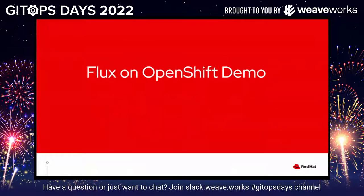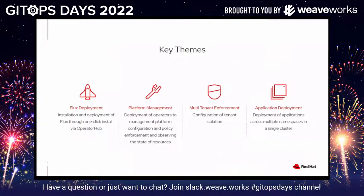Let's talk about how Flux and OpenShift can be realized with a great demo. Some of the key themes we're going to highlight: first, we'll deploy Flux on OpenShift by going into the OperatorHub. We'll talk about how platform teams can manage the deployment of namespaces on a Kubernetes environment. We'll focus on security aspects and isolate different workloads within different namespaces. We'll deploy an application to multiple namespaces, and see how application and SRE teams can monitor the current state of the Flux platform.